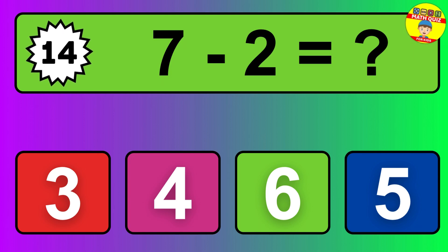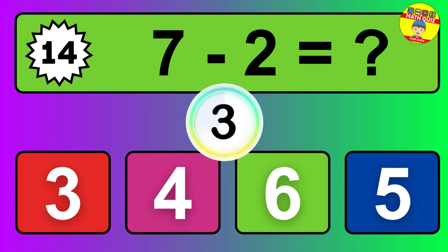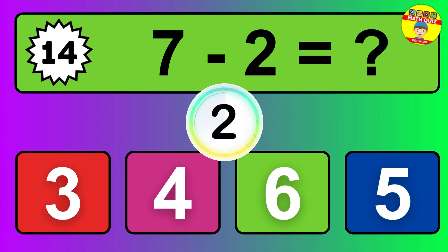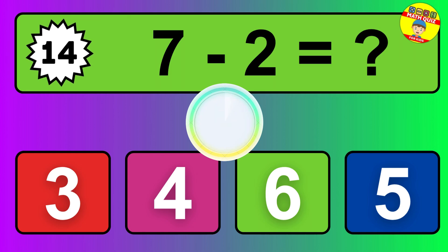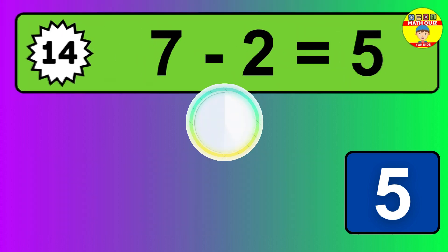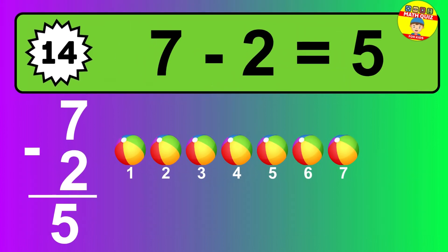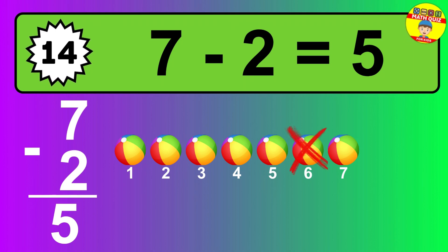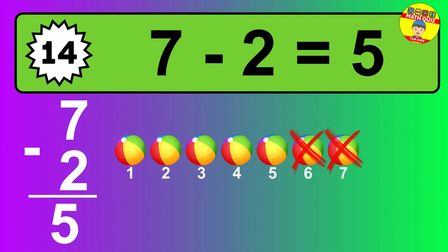Question 14. 7 minus 2 equals what? The answer is 7 minus 2 is 5. Let's count it: 1, 2, 3, 4, 5.